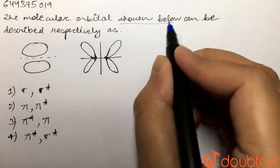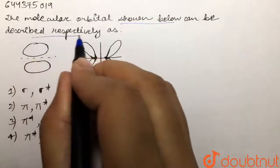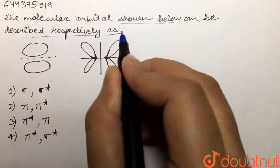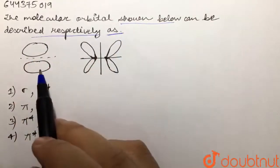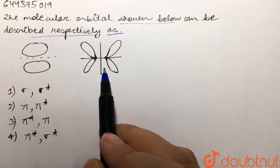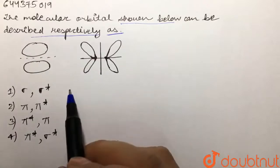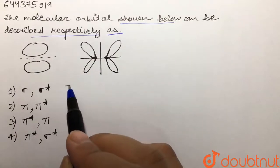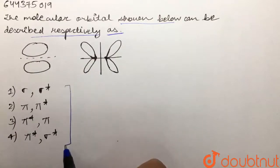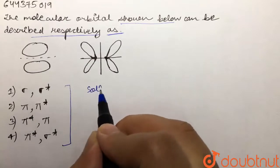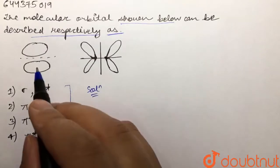Our question is: the molecular orbitals shown below can be described respectively as. We are given these two molecular orbitals and we are supposed to find which type of molecular orbitals these are.